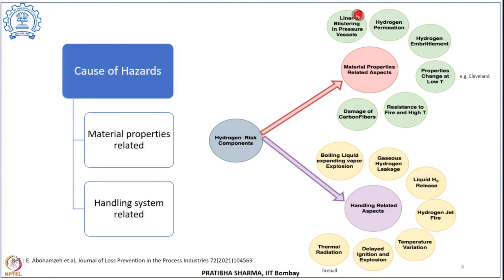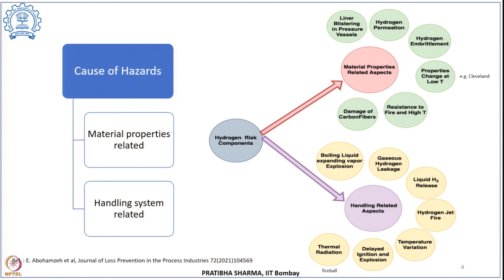Another important material property related hazard is liner blistering in pressure vessels. In type 4 vessels — which have an overwrap of carbon fiber composite and an inner polymer liner — when hydrogen is filled at high pressure, a certain amount of hydrogen gets absorbed into the inner polymer. If the depressurization rate is greater than the rate at which hydrogen escapes by diffusion during depressurization, there could be delamination or blistering of the polymer liner. This blistering depends upon parameters like initial filling pressure, discharge rate, and dwell time.